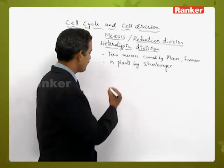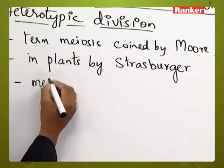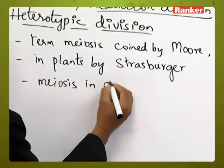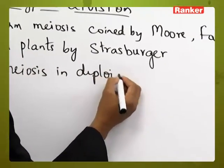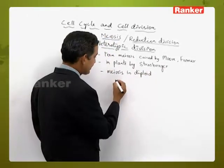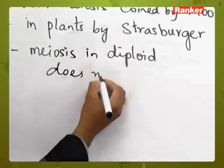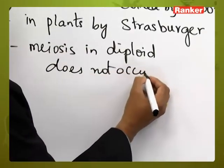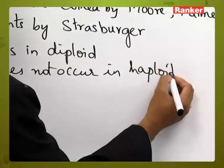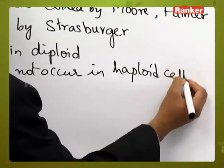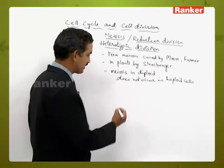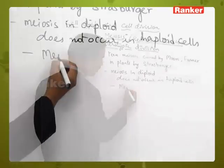Meiosis occurs only in diploid cells, or cells which have an even number of chromosomes. It does not occur in haploid cells. In plants, any cell which is undergoing meiosis is called a meocyte.